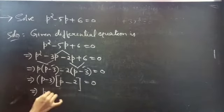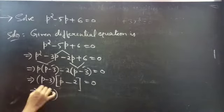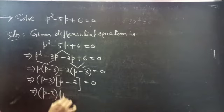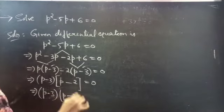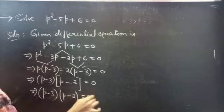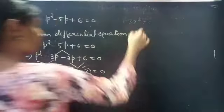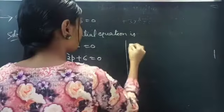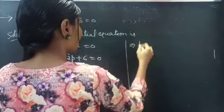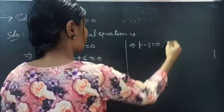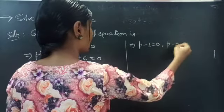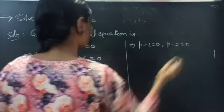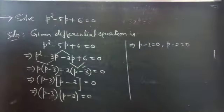We will get P minus 3 of P minus 2 equals to 0. Then, we have P minus 3 equals to 0 and P minus 2 equals to 0.